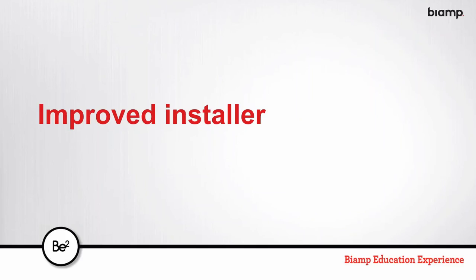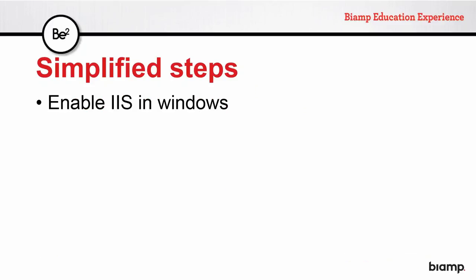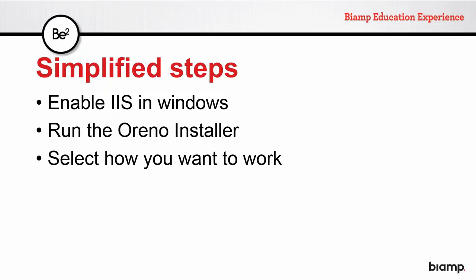Now let's move to the improved installer. Many of you went through installing Orino 1.0, which required a big process for Orino Manager — installing IIS for Windows, setting up tasks, and a whole bunch of other steps. We developed a tool that simplifies those steps. Now the only things needed are to enable IIS in Windows — which can't be automated — and then just run the Orino installer. All the previous manual steps are now handled automatically by the new installer.